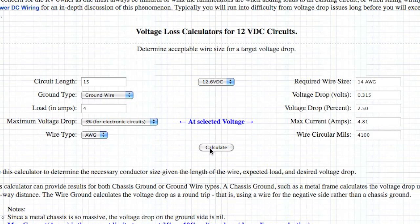Now, we want to do a calculate, and we see here that the recommended wire size is 14 AWG, which is what we're using, and the voltage drop is 0.315 volts or 315 millivolts, and we have a 2.5% voltage drop, which is within our 3% for electronic circuits. And in fact, the maximum current that would stay under 3% would be 4.81 amps. And just as a reference, 4100 circular mills for the wire.